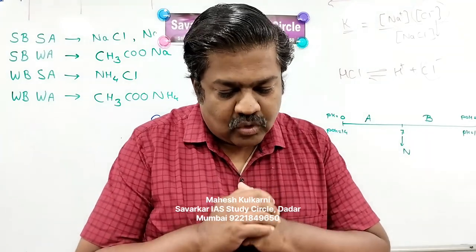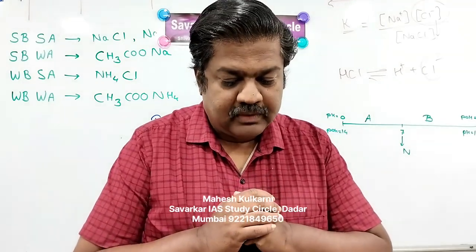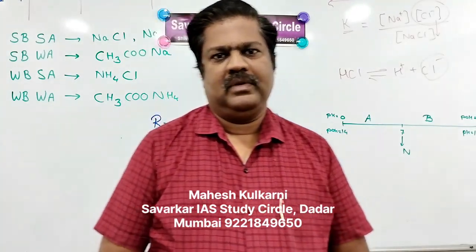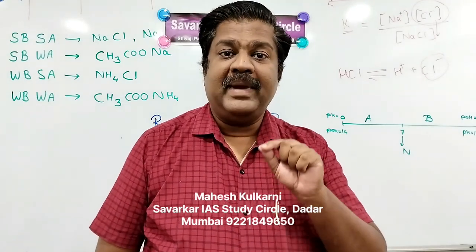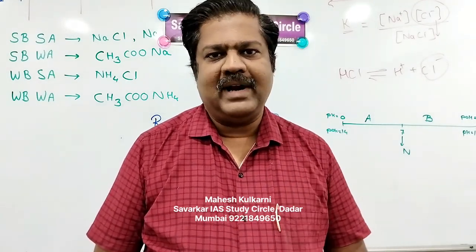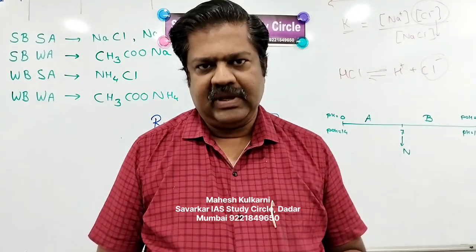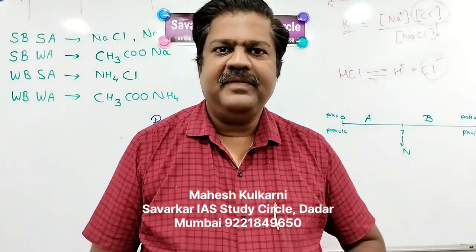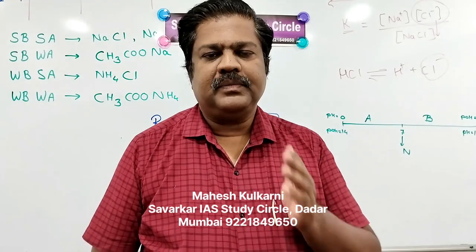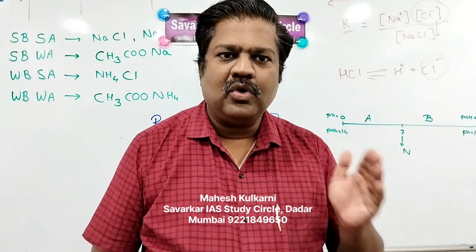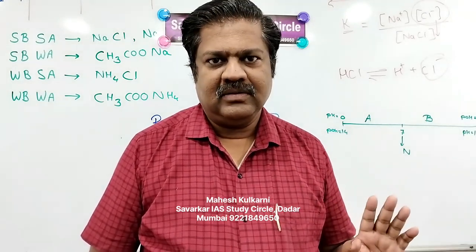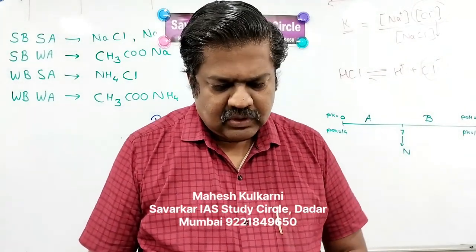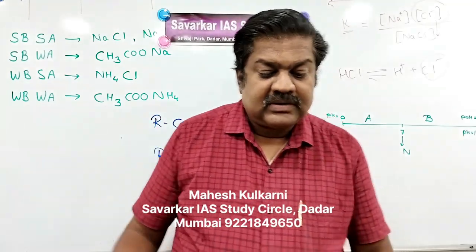Second: 22-karat gold contains 22 parts of gold and 2 parts of other metal. Pure gold is soft and not suitable for making ornaments, so we add something and form an alloy. When we talk of 22-karat gold, it means 22 parts gold and 2 parts of another metal — the second statement is true.